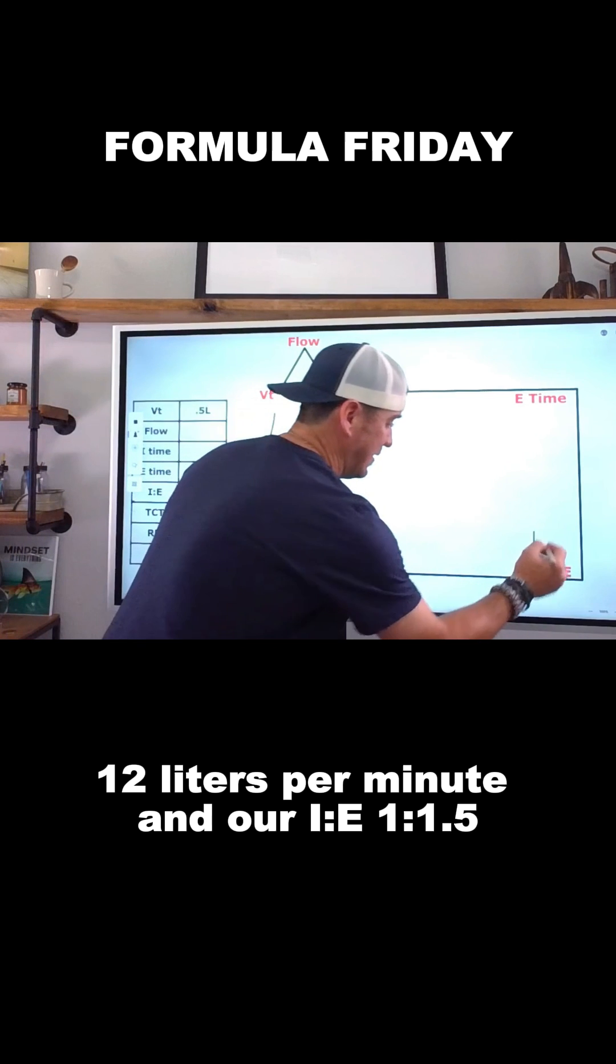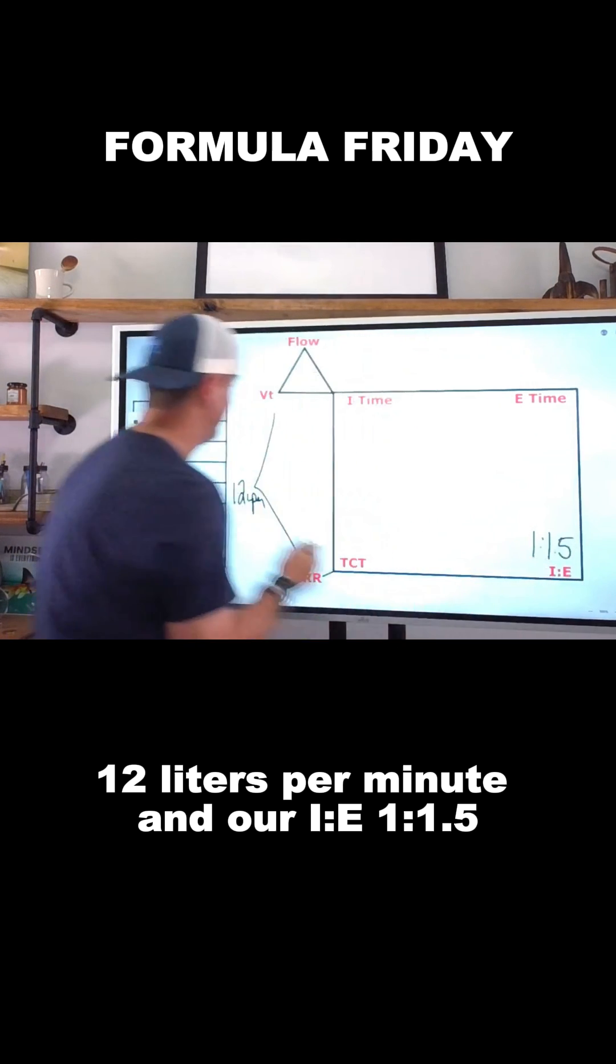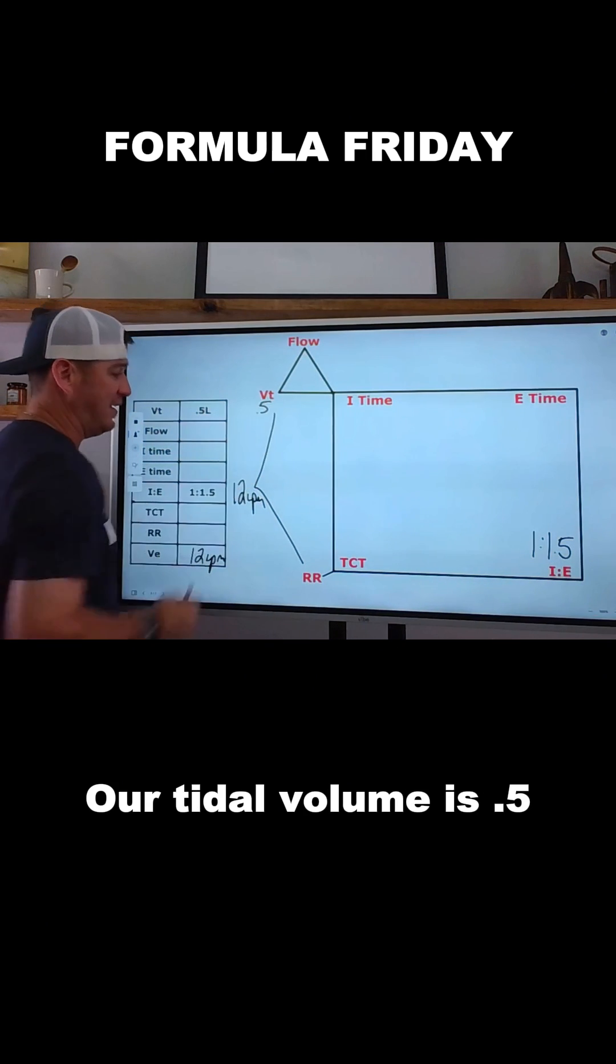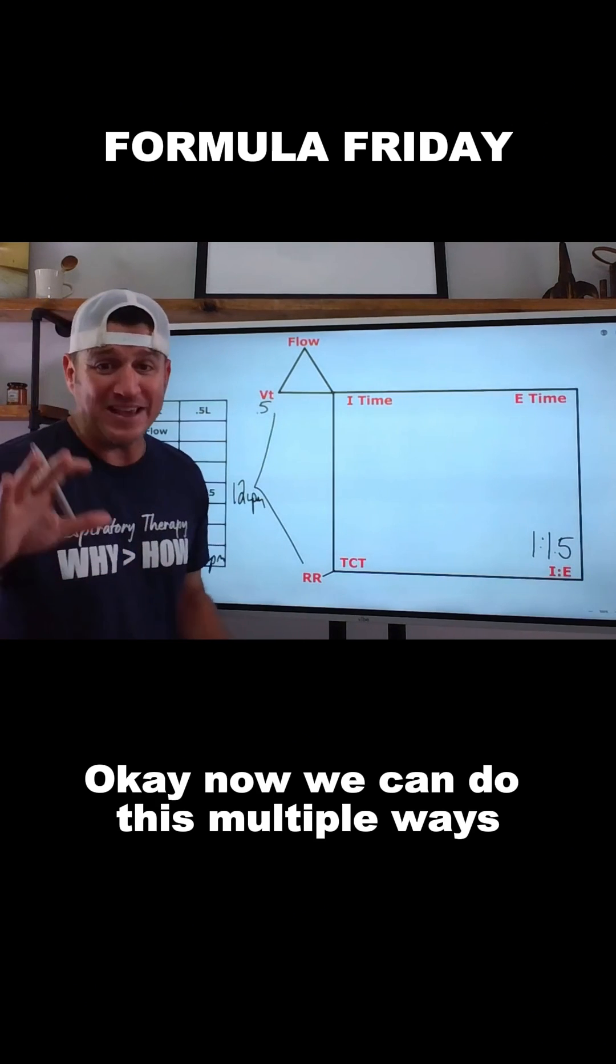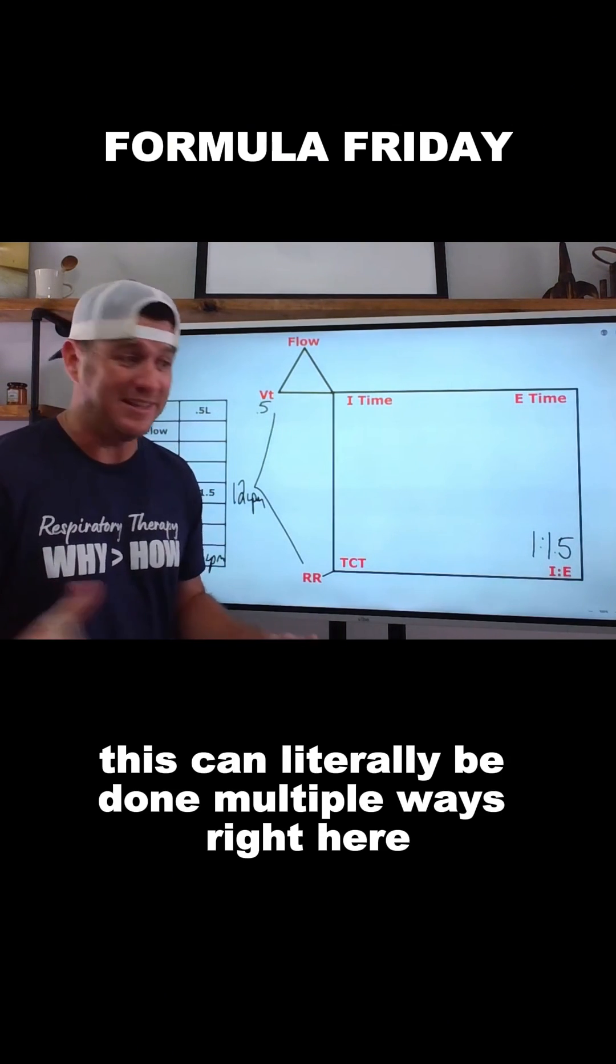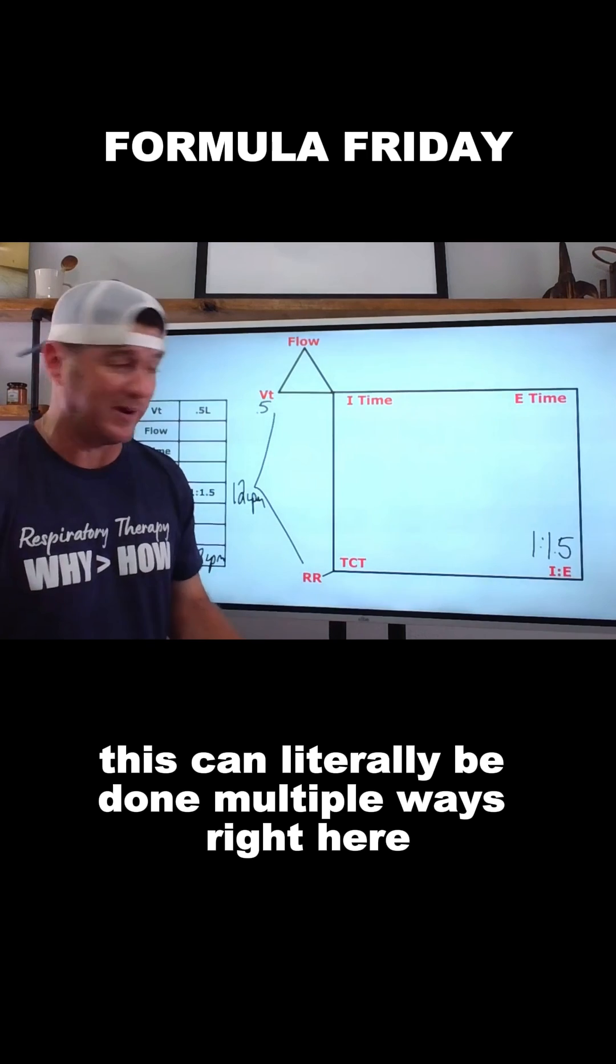And our I:E ratio is 1 to 1.5, our tidal volume is 0.5. Now, we can do this multiple ways. This can literally be done multiple ways right here.